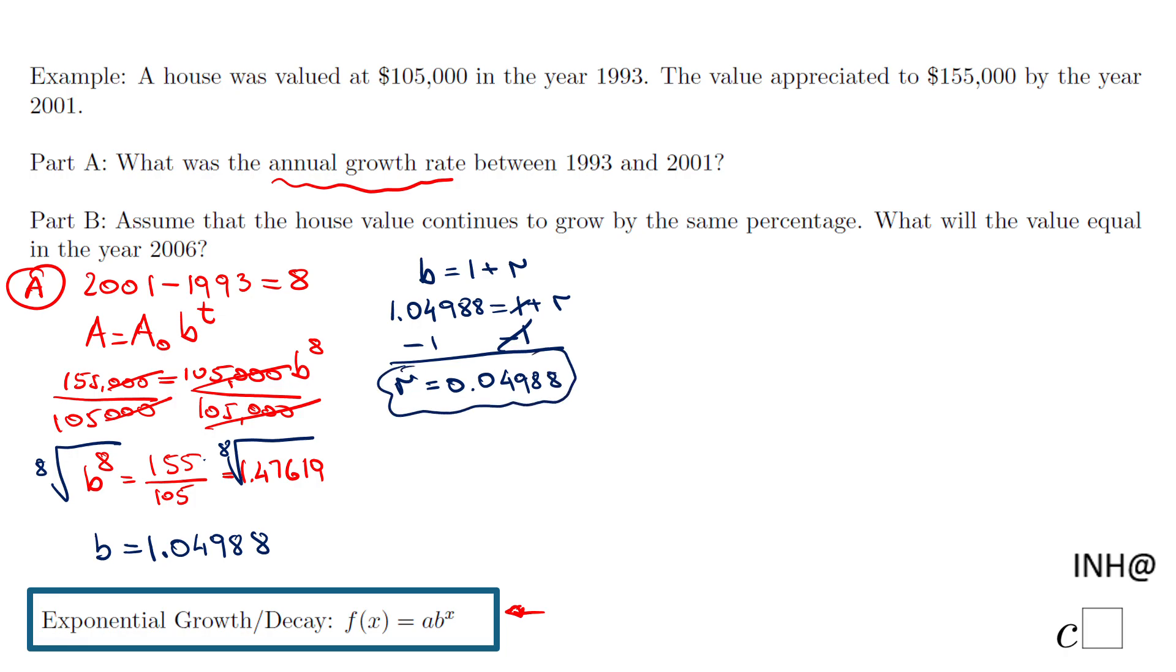I get r equals 0.04988, which is a good answer. However, let's convert to percentage form since sometimes you need that. Move the decimal twice to the right, and I'll round to the nearest hundredth: 4.99%.